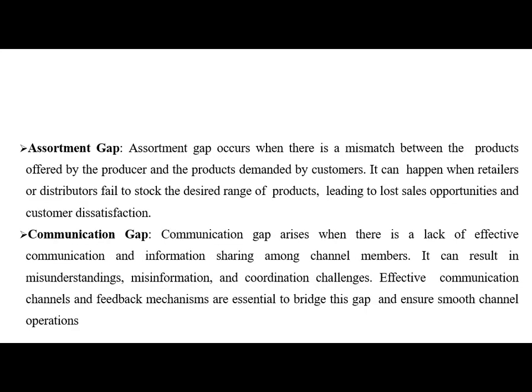Assortment gap occurs when there is a mismatch between the products offered by the producer and the products demanded by the customer. It can happen when retailers or distributors fail to stock the desired range of goods, leading to lost sales opportunities and customer dissatisfaction. Communication gap arises when there is a lack of effective communication and information sharing among channel members, resulting in misunderstandings, misinformation and coordination challenges. Effective communication channels and feedback mechanisms are essential to bridge this gap and ensure smooth channel operations.